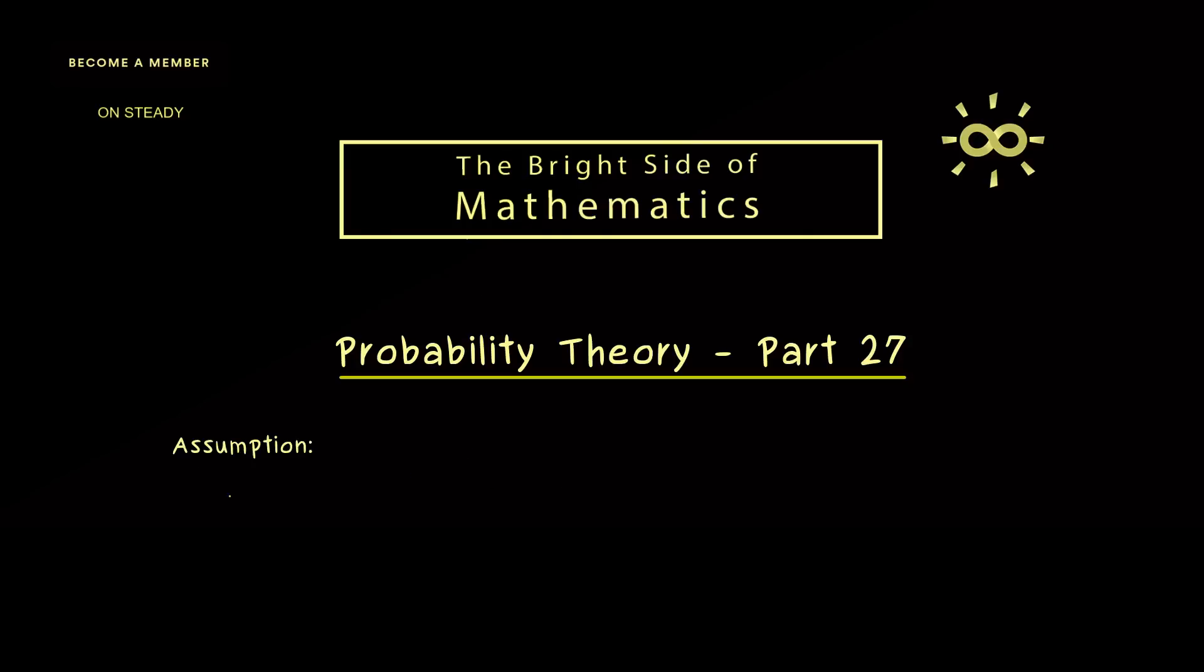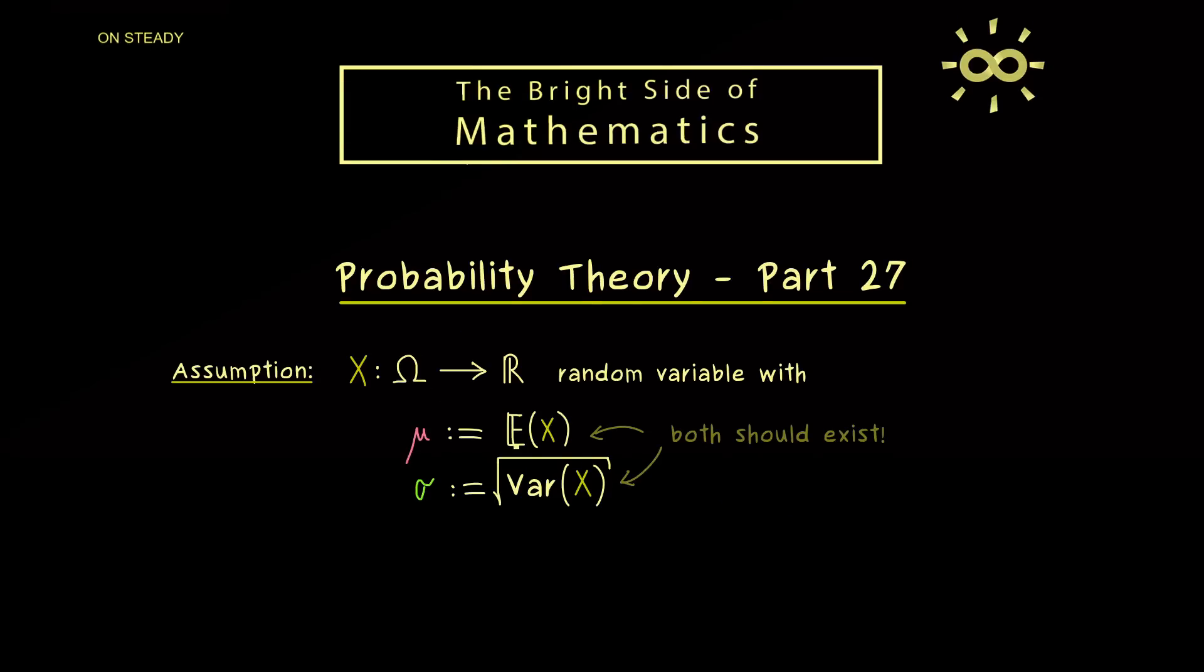With that I would say we can immediately start with the general assumption of this video. Namely we have a given random variable X defined on a probability space. For this random variable X we want that the expectation and the variance are defined, which means they are both given as finite real numbers. Hence this is the only restriction we have for the random variable X here. Moreover we can shorten the notation. Let's use the letter μ for the expectation and the letter σ for the square root of the variance. Indeed we already know that this is called the standard deviation of the random variable X. In particular you should know that these are common notations one has for the normal distribution. However here our random variable X can have any distribution.